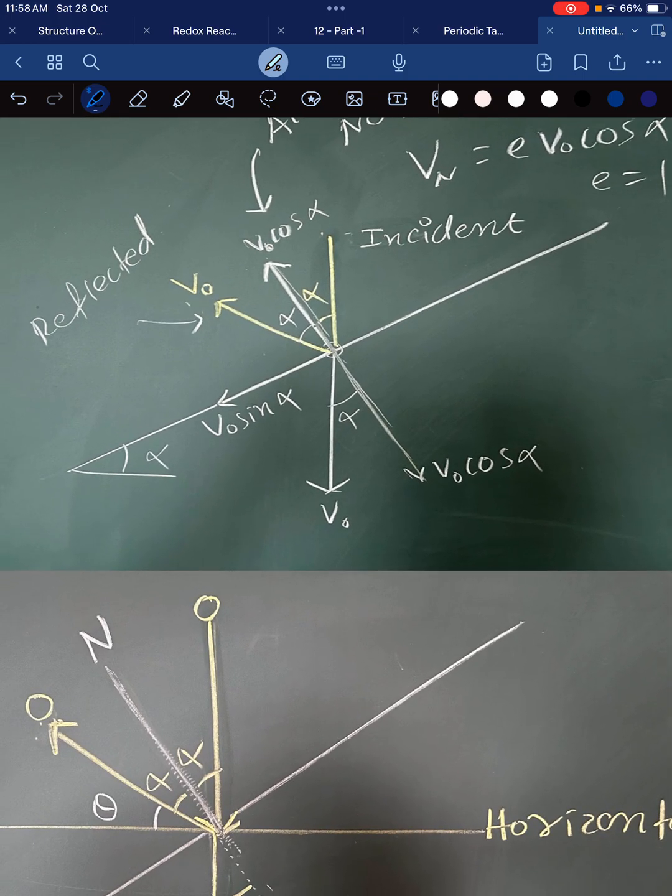Let us assume that as per the given question, a ball is falling vertically downward with a velocity v naught. It collides here and then it rebounds. Now, how it will rebound, that we need to understand.